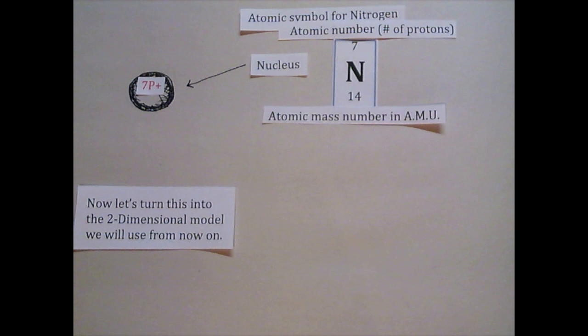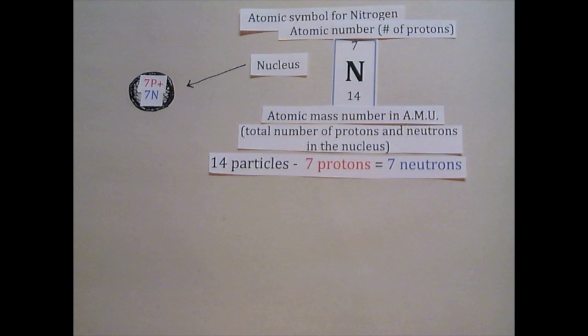Because electrons have very little mass, when rounded, the atomic mass number tells us the number of protons and the number of neutrons in the nucleus of the average atom.